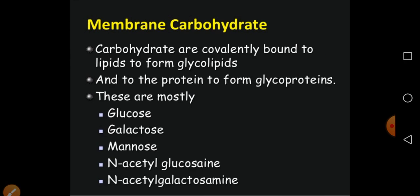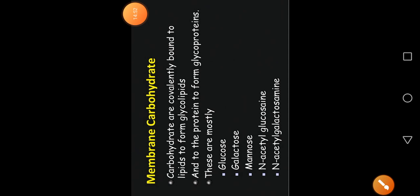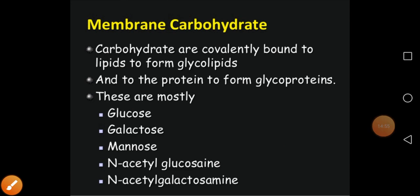Membrane carbohydrates are covalently bound to lipids, forming glycolipids, or covalently bound to proteins, forming glycoproteins. Glucose, galactose, mannose, N-acetylglucosamine, and N-acetylgalactosamine are the major sugars or carbohydrates that attach to the membrane.